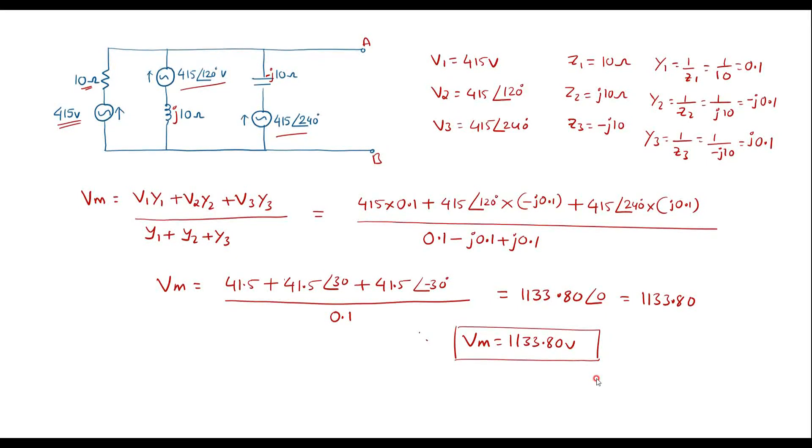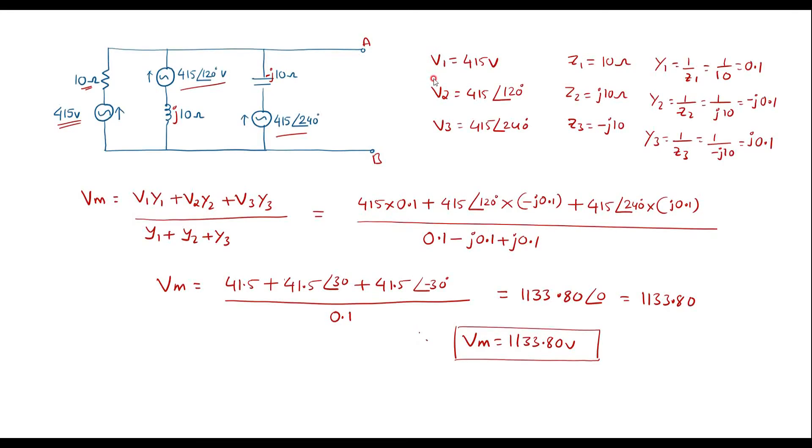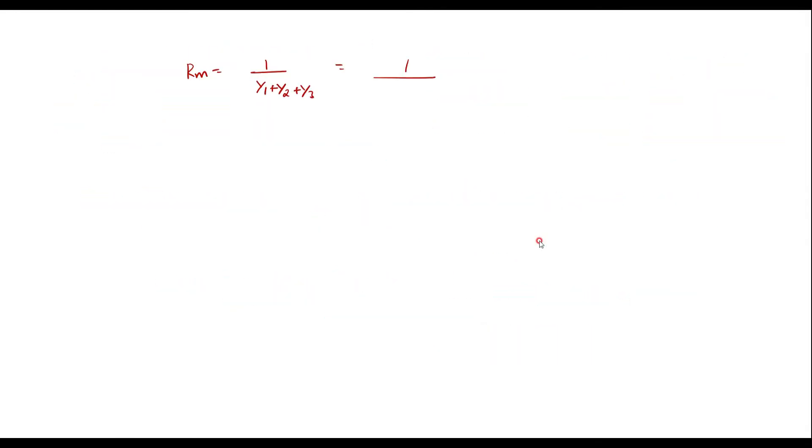Now calculate the Millman's resistance that is Rm. Rm will be equal to 1 upon Y1 plus Y2 plus Y3 which is equal to 1 upon 0.1.